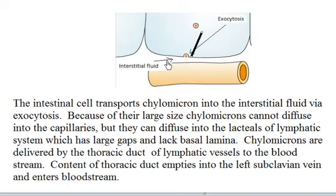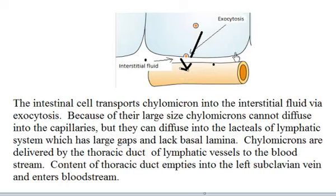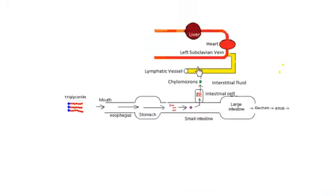The chylomicrons will exocytose out of the epithelial cell into the interstitial fluid, and then enter the lymphatic vessels. They cannot enter blood vessels directly because the fat droplets are too large. However, lymphatic vessels have large gaps, so the chylomicrons enter the lymphatic vessels, which then transport them back into the circulation.